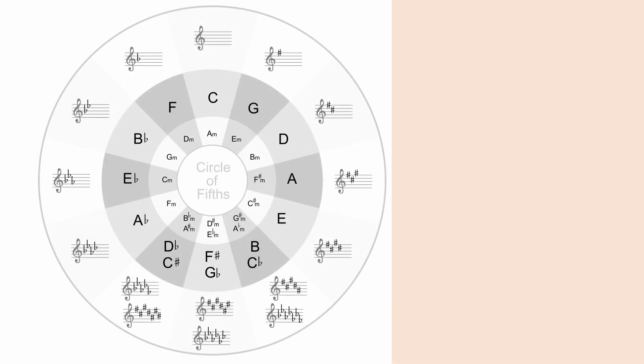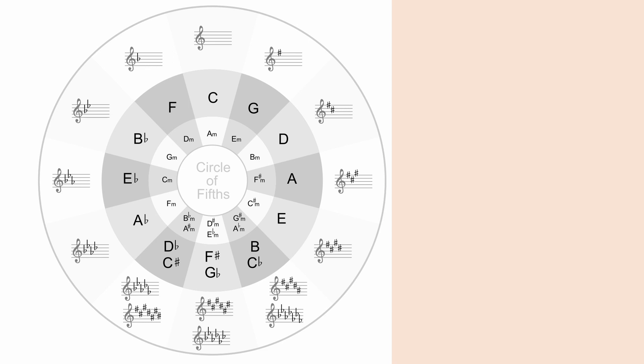However, there was a problem. After 12 fifths, in theory, we should arrive back to a level that matches with an octave reproduction of the first pitch. In reality, that pitch is actually a little higher by a microtonal interval called a comma. This irrationality, in what should otherwise be a rational system, not only pokes a hole in Pythagoras' religious beliefs, it creates a dilemma that musicians have had to deal with for millennia.